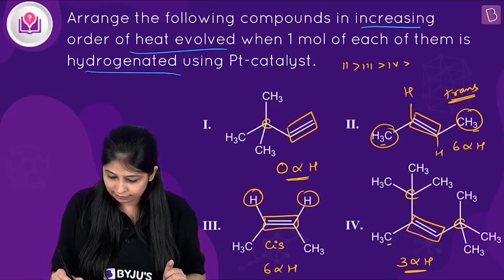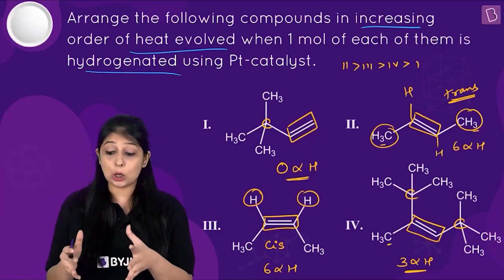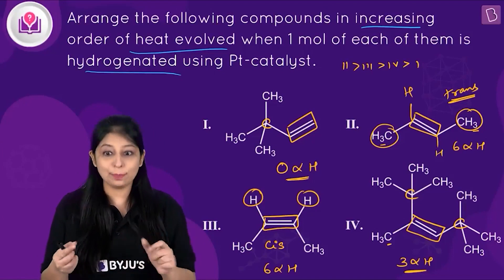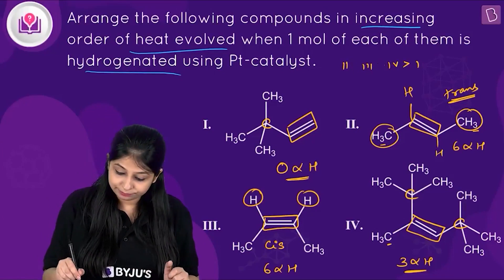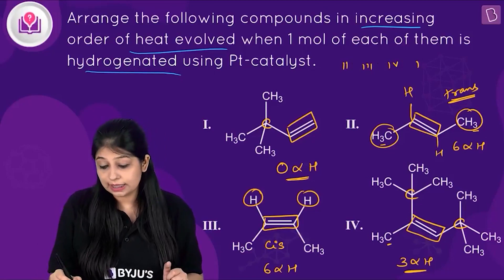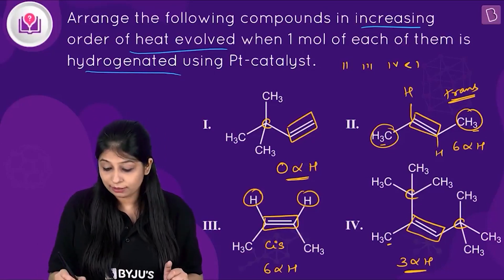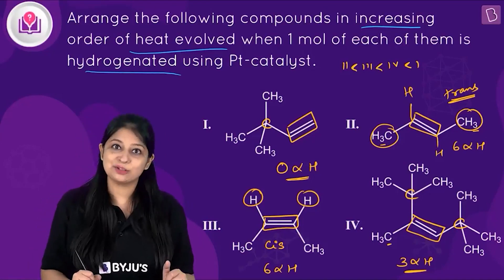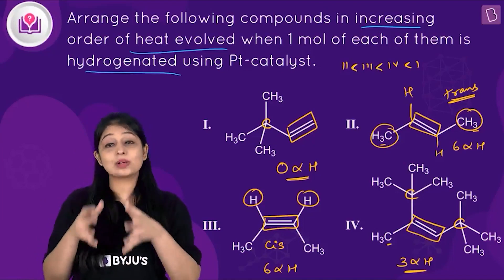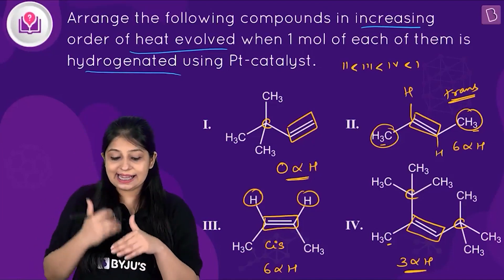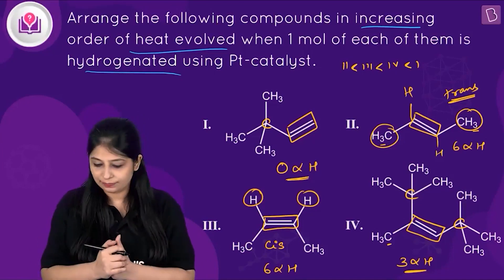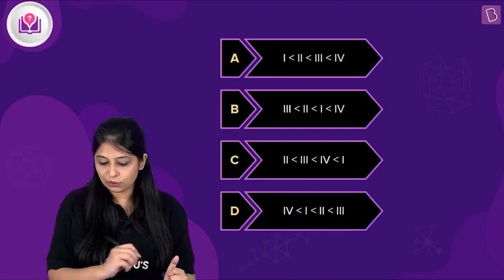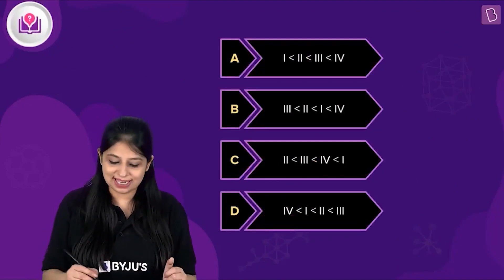Looking at this, the stability order is: alkene 2 is the most stable, followed by alkene 3, then alkene 4, then alkene 1. The heat of hydrogenation will be the opposite: maximum heat evolved from alkene 1, followed by alkene 4, then alkene 3, then alkene 2. This matches option C, which is the correct answer.